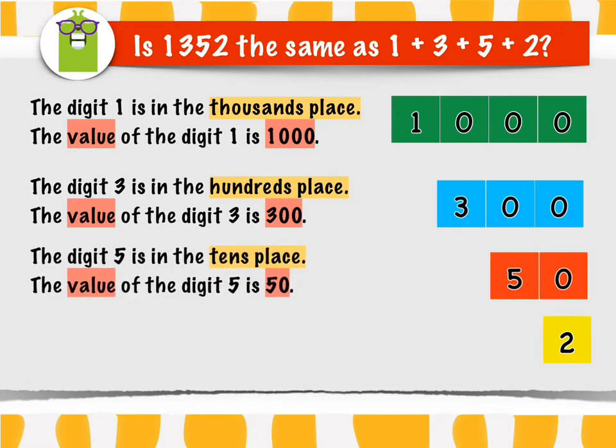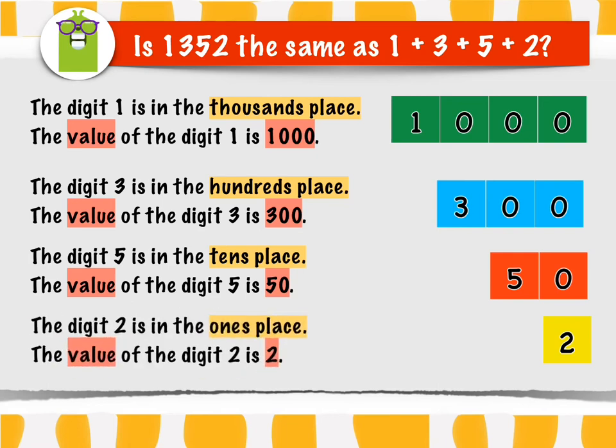The digit 5 is in the tens place. The value of the digit 5 is 50. The digit 2 is in the ones place. The value of the digit 2 is 2.